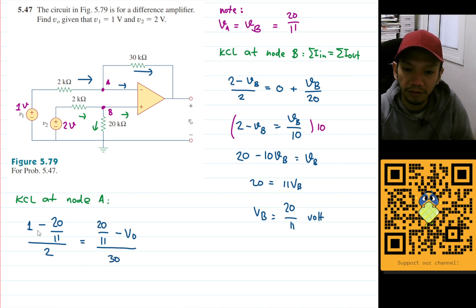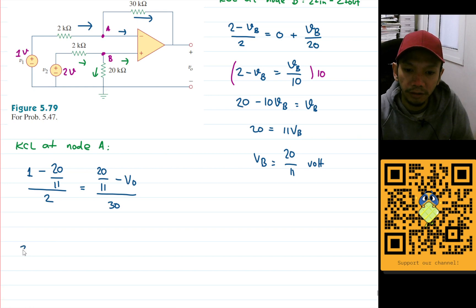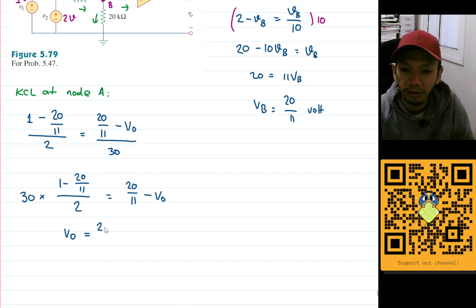So now let's move 30 there, so I'll have 30 multiplied by 1 minus 20 over 11 divided by 2. And that will be 20 over 11 minus V0. This is 20 over 11 divided by 2.